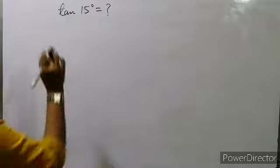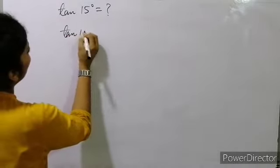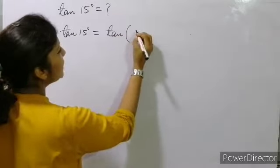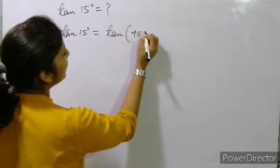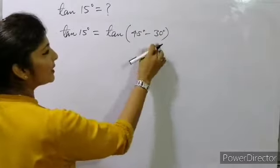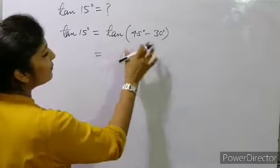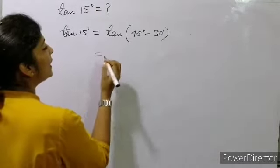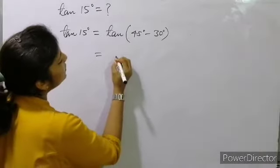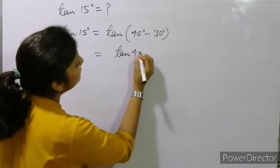Now we have to find the value of tan 15°. We can write tan 15° as tan(45° − 30°), since 45 − 30 = 15. We will apply the formula for tan(x − y): tan x − tan y divided by 1 + tan x · tan y.